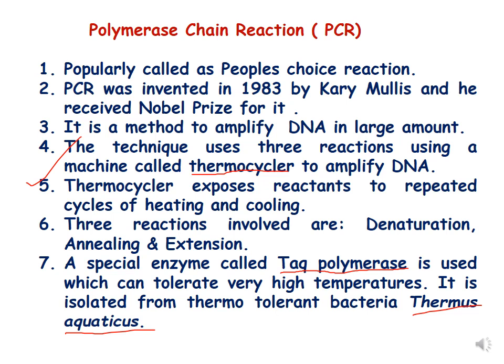In PCR, these three reactions are done with the help of a special enzyme called Taq polymerase. It is called Taq polymerase because it was isolated from Thermus aquaticus — the word 'Taq' comes from Thermus aquaticus — and because it is a polymerase, it can synthesize DNA. This is a special enzyme because it can tolerate very high temperatures.